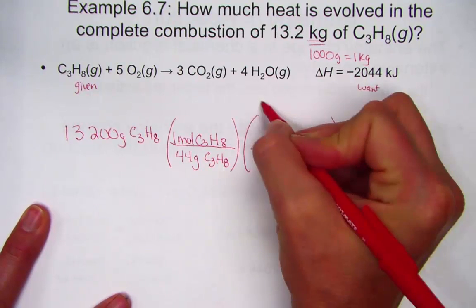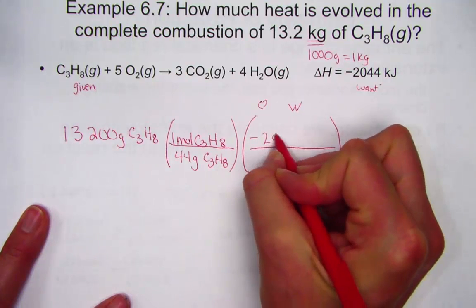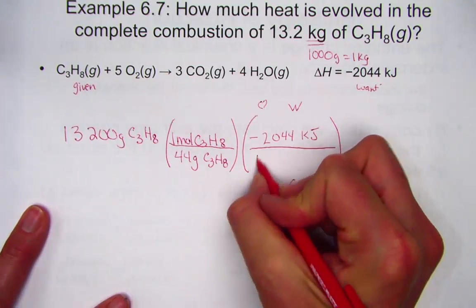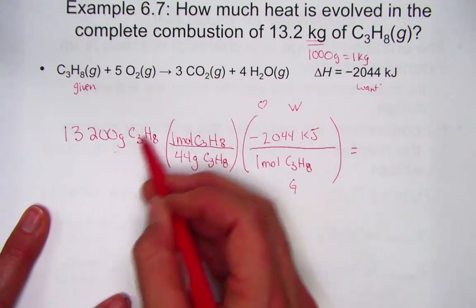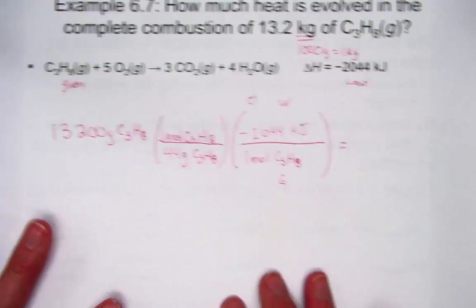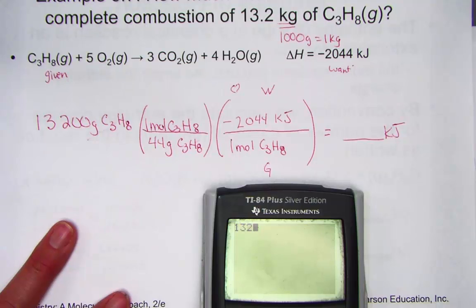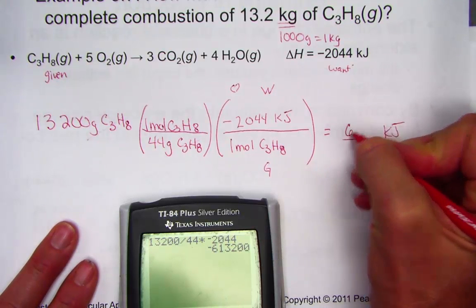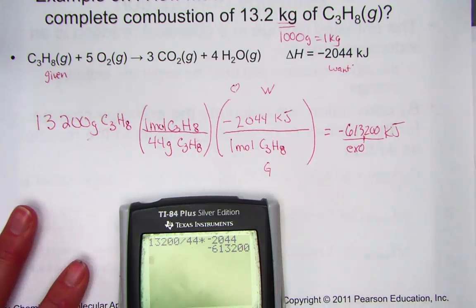We're now ready to do the stoichiometric ratio of want over given. We want kilojoules of heat energy — there are 2044 kJ of heat released for every one mole of propane that combusts, giving a ratio of 2044 over 1. Starting with 13,200 grams, divide by 44, and multiply by negative 2044. We find a value of 613,200 kilojoules. The negative sign tells us it's exothermic.